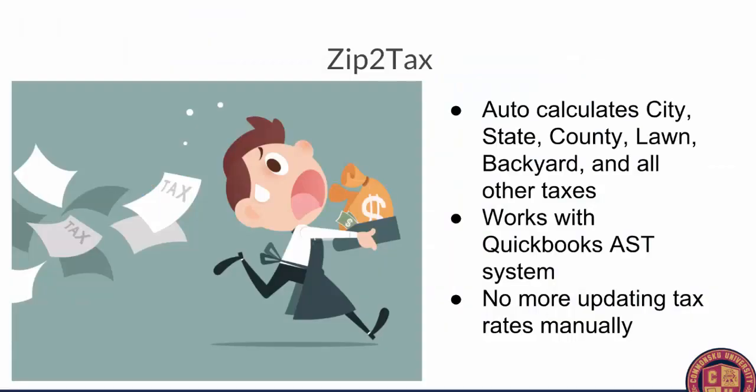Zip to Tax — everybody's favorite topic, taxes. Zip to Tax is a system we've integrated with that automatically calculates the tax that should be charged on an order based on the shipping zip code. This will only work if you are using QuickBooks Online and their automated sales tax system. If you're on the old tax system, you can email QuickBooks and they'll switch you over to AST. It's going to automatically calculate the proper tax rate based on whatever city, state, and neighborhood you're shipping to — without you having to manually update your tax rates every month.